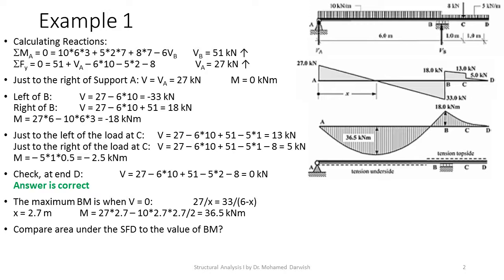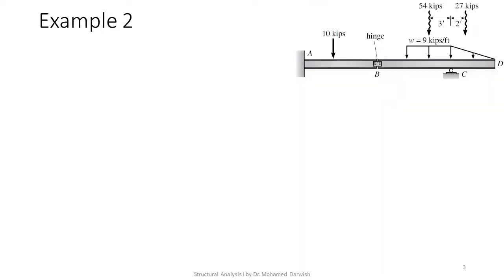Moving to the second example, which is more complicated. We have an intermediate hinge with a fixed support at A. Point B acts as a second lever partially supporting beam BCD, while the other part is supported on support C.